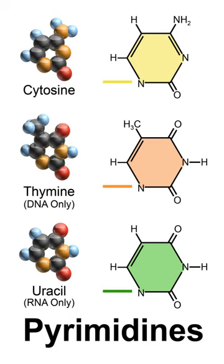Three nucleobases found in nucleic acids — cytosine, thymine, and uracil — are pyrimidine derivatives. In DNA and RNA, these bases form hydrogen bonds with their complementary purines. Thus, in DNA, the purines adenine and guanine pair up with the pyrimidines thymine and cytosine, respectively. In RNA, the complement of adenine is uracil instead of thymine, so the pairs that form are adenine-uracil and guanine-cytosine.